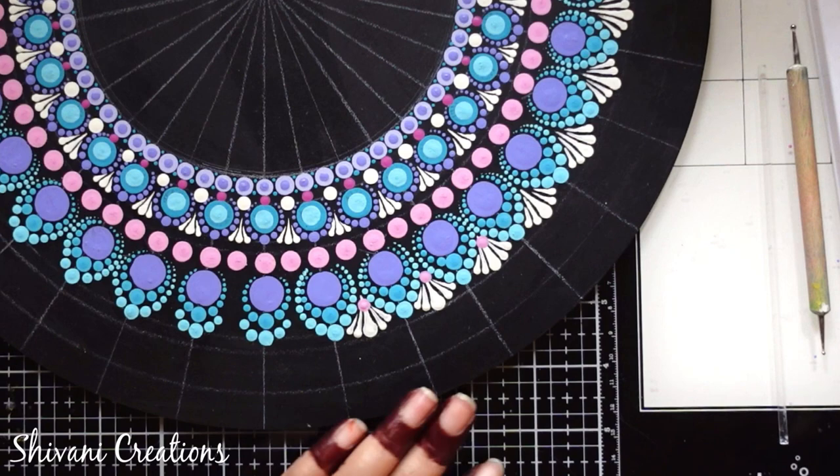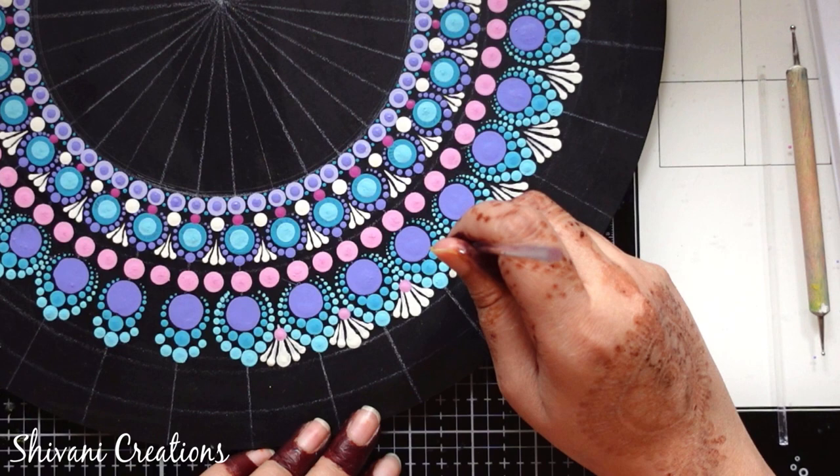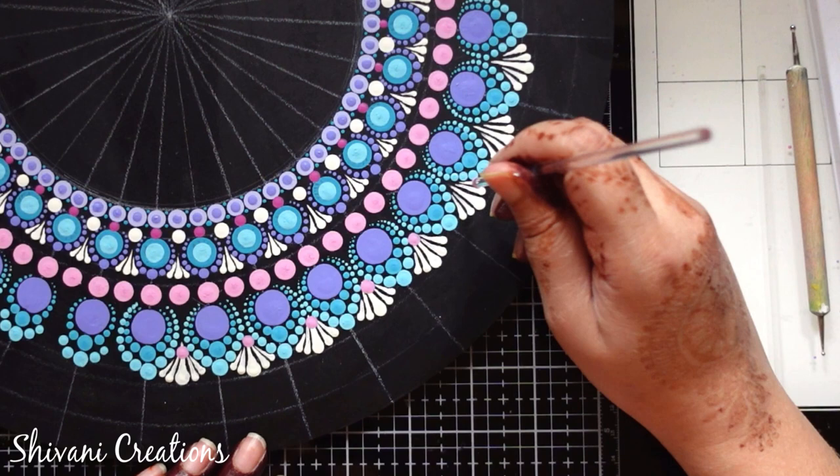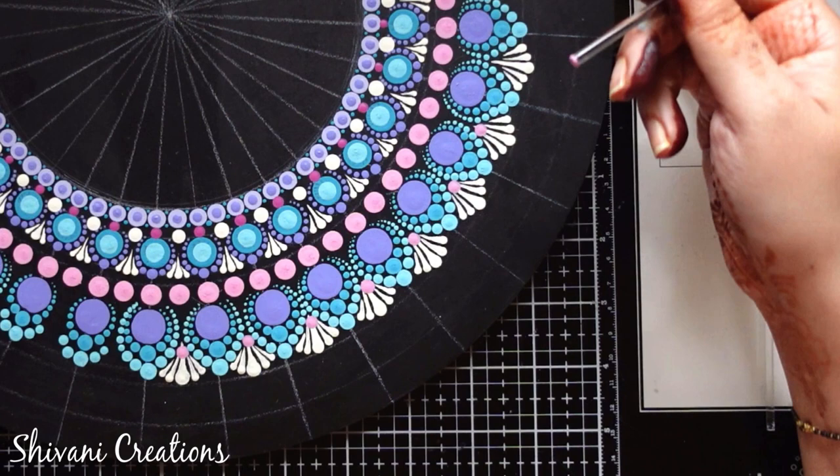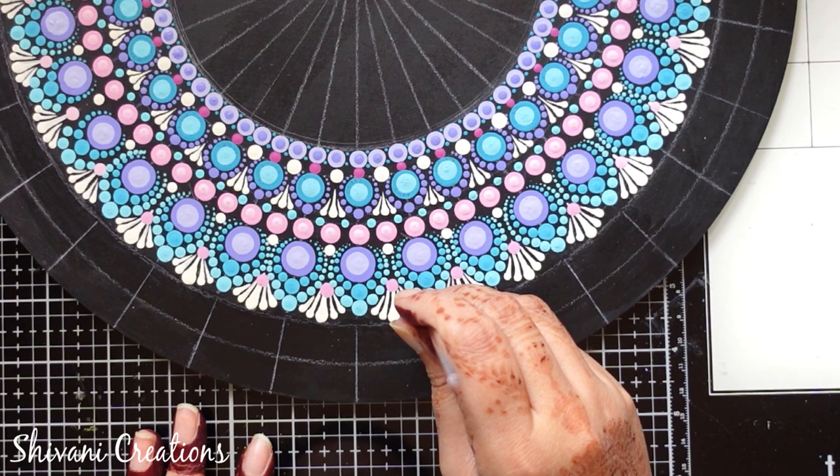Then on the edge of each petal, I am putting light pink color dots. After that, using the same magenta pink color, I am putting two more dots.